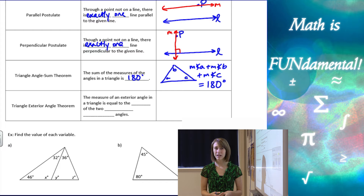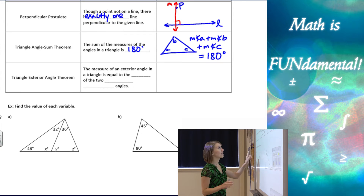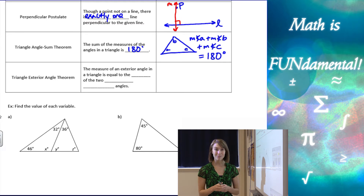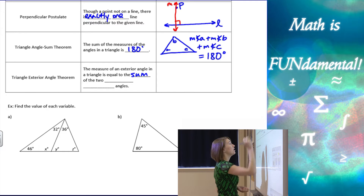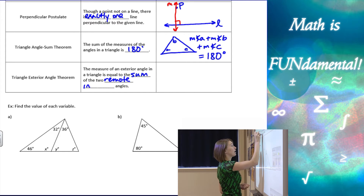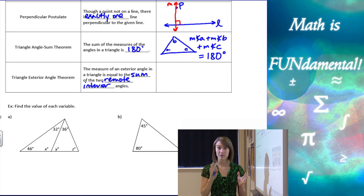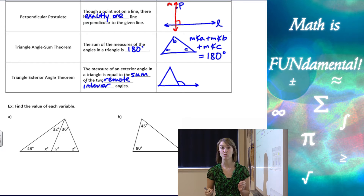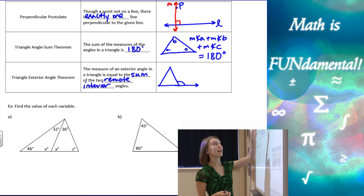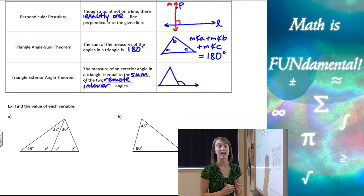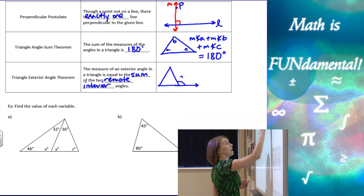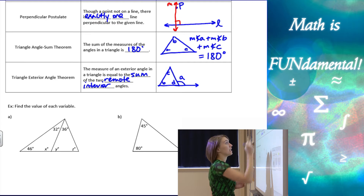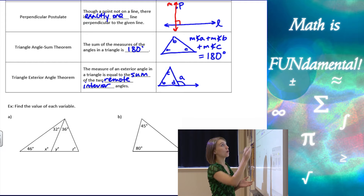We can use the triangle sum theorem to make equations when solving for variables. Last theorem here is the triangle exterior angle theorem — kind of a shortcut. This says that the measure of an exterior angle in a triangle is equal to the sum of the two remote interior angles. An exterior angle is the angle we get when we extend one of the sides of the triangle, and that angle on the outside adjacent to the interior angle is our exterior angle. Let's name the angles A, B, C, and D.